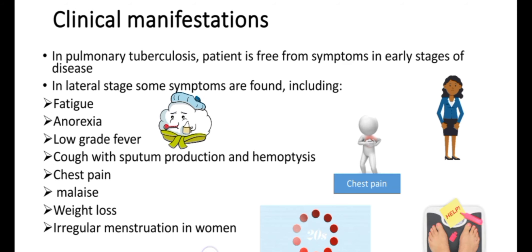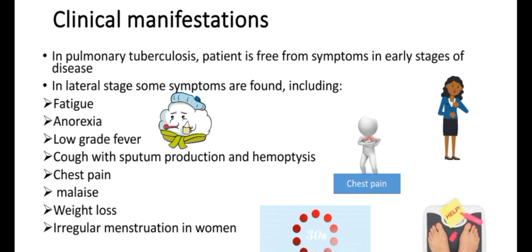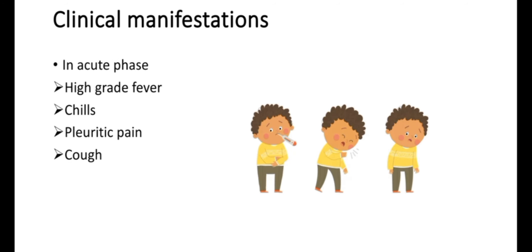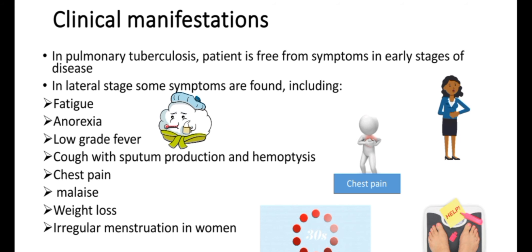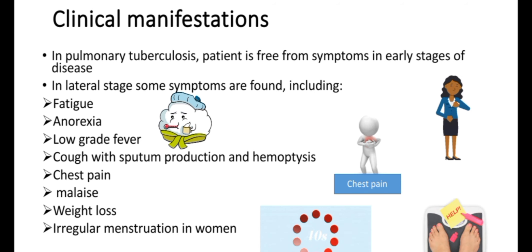Clinical manifestations: in pulmonary tuberculosis, the patient is free from symptoms in the early stages of the disease. This early stage is known as the exposure stage. There are three stages of pulmonary tuberculosis. Stage one is the exposure or early stage, in which the patient is free from symptoms. Then comes the latent phase, where a few symptoms appear including fatigue, anorexia, low-grade fever, cough with sputum, and hemoptysis.